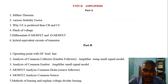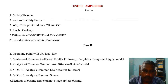Biasing methods are very important. Voltage divider biasing is the most important method in most university questions. Fixed bias is also important, but it is very simple — if you look at the exam, you can solve it easily. Problems are one of the key areas of analysis in this unit.